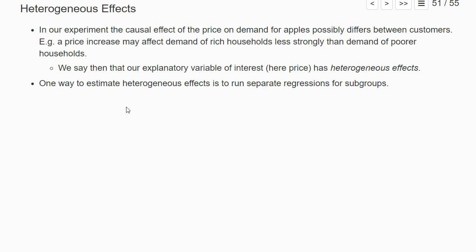In our experiment, it seems plausible that a price increase affects the demand of different customer groups differently. For example, you might think that a price increase affects the demand of rich households less than the demand of poorer households. So we say in such a case that our explanatory variable of interest, here the price, has heterogeneous effects. It affects different subgroups differently. And one way to account for such heterogeneous effects is to run separate regressions for separate subgroups.